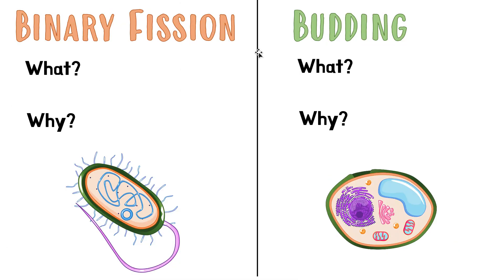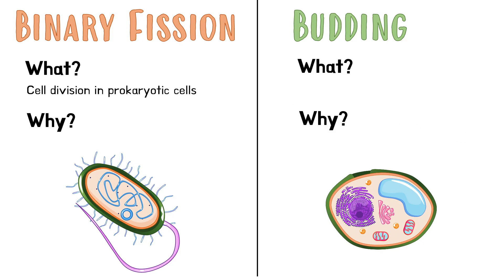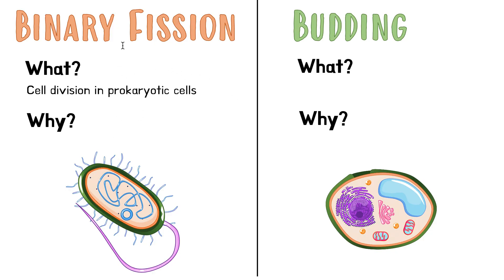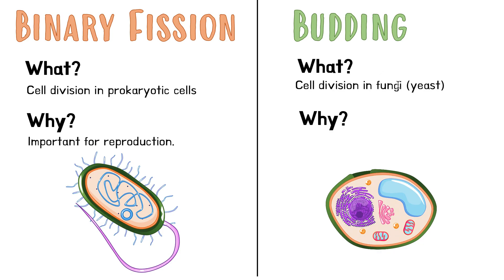Binary fission and budding are the next two topics. Binary fission is cell division in prokaryotic cells. There are two kinds of cells: eukaryotic and prokaryotic. We are made up of eukaryotic cells, and we use mitosis to divide them. But prokaryotic cells, like bacteria, use binary fission, which is distinct from mitosis, and it's very important for their reproduction. Budding is another kind of division that happens in certain fungi. Fungi are eukaryotic but different from our kind. For example, yeast divides by budding — that's a different process, also important for those cells to reproduce.